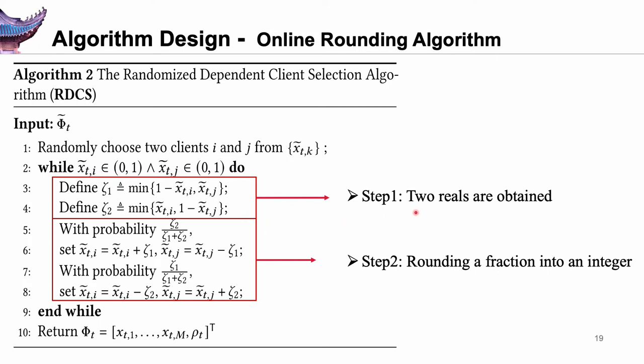The detail of the rounding algorithm is presented in Algorithm 2, consisting of two steps. First, two reals are obtained. Next, the two reals are used as the probability to round the fraction into an integer.